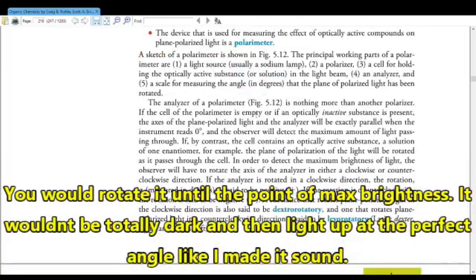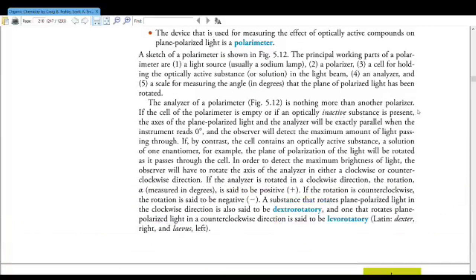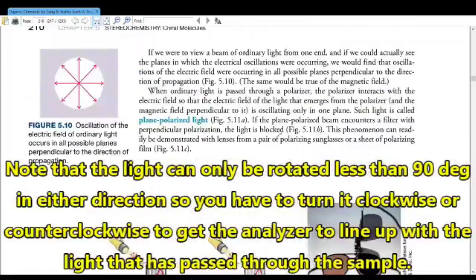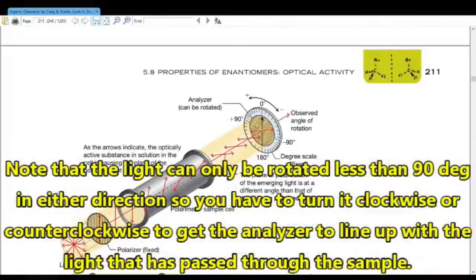If the cell of the polarimeter is empty, or if an optically inactive substance is present, in other words something that is achiral or a 50-50 mix of enantiomers, the axes of the plane polarized light in the analyzer will be exactly parallel when the instrument reads zero, and the observer will detect the maximum amount of light passing through. If, by contrast, the cell contains an optically active substance, a solution of one enantiomer, the plane of polarization of the light will be rotated as it passes through the cell. In order to detect the maximum brightness of the light, the observer will have to rotate the axis of the analyzer in either a clockwise or counterclockwise direction. They mean from zero, you gotta rotate it clockwise or counterclockwise.